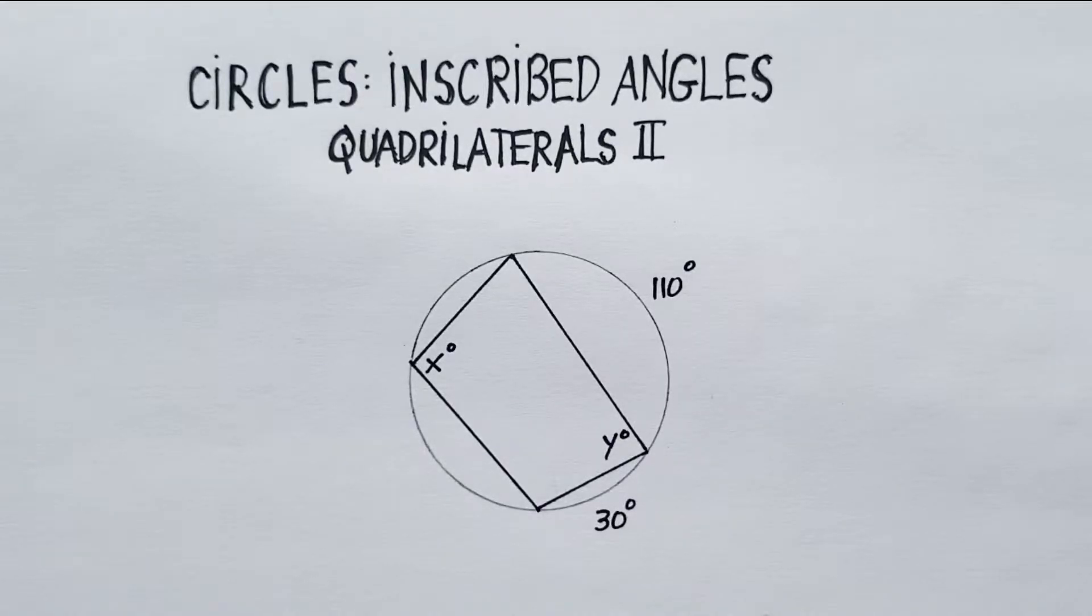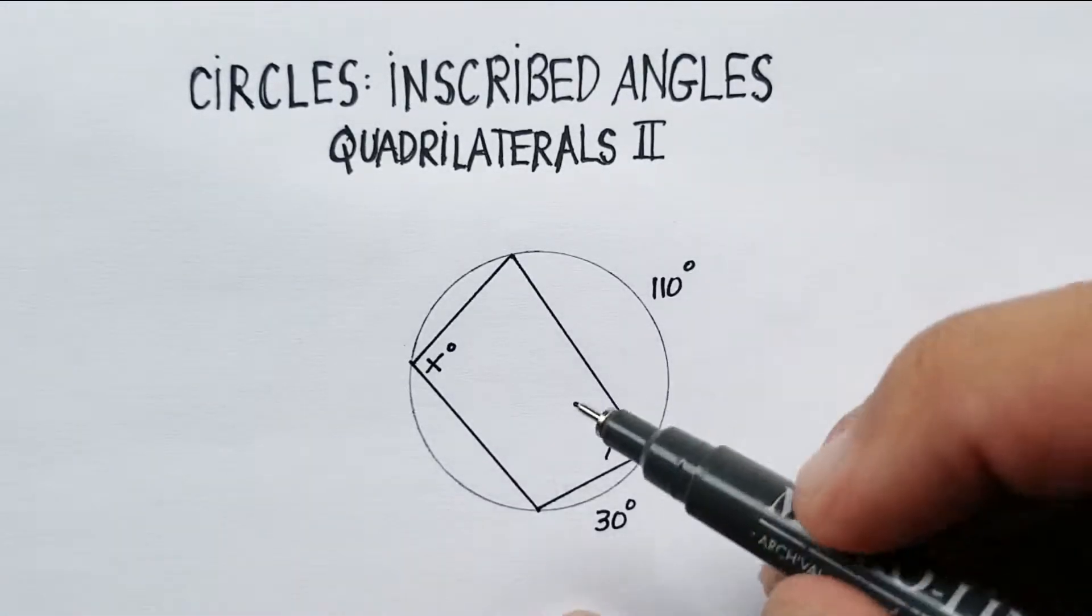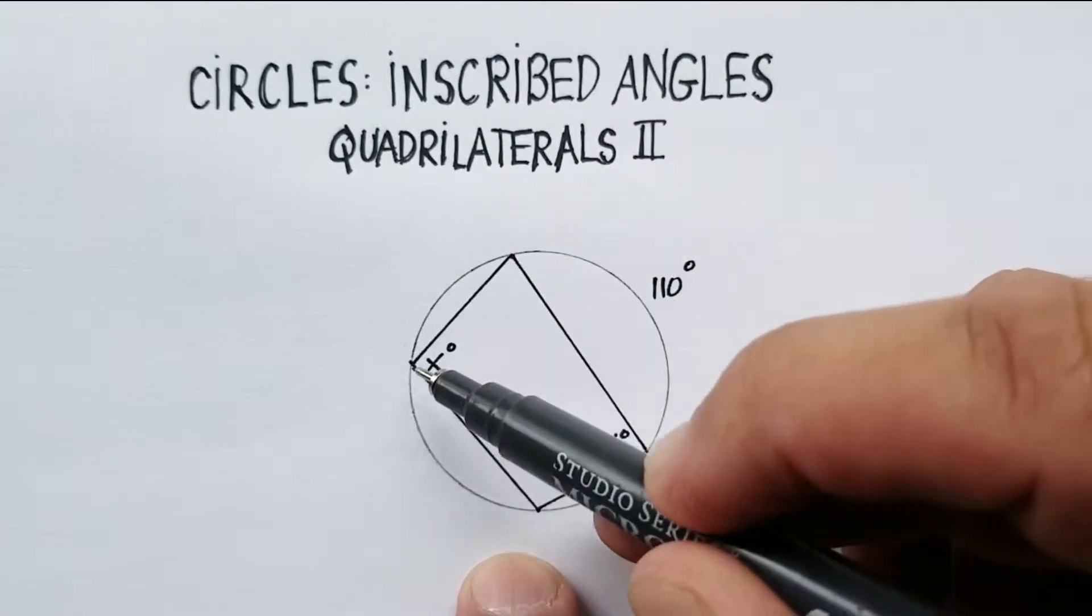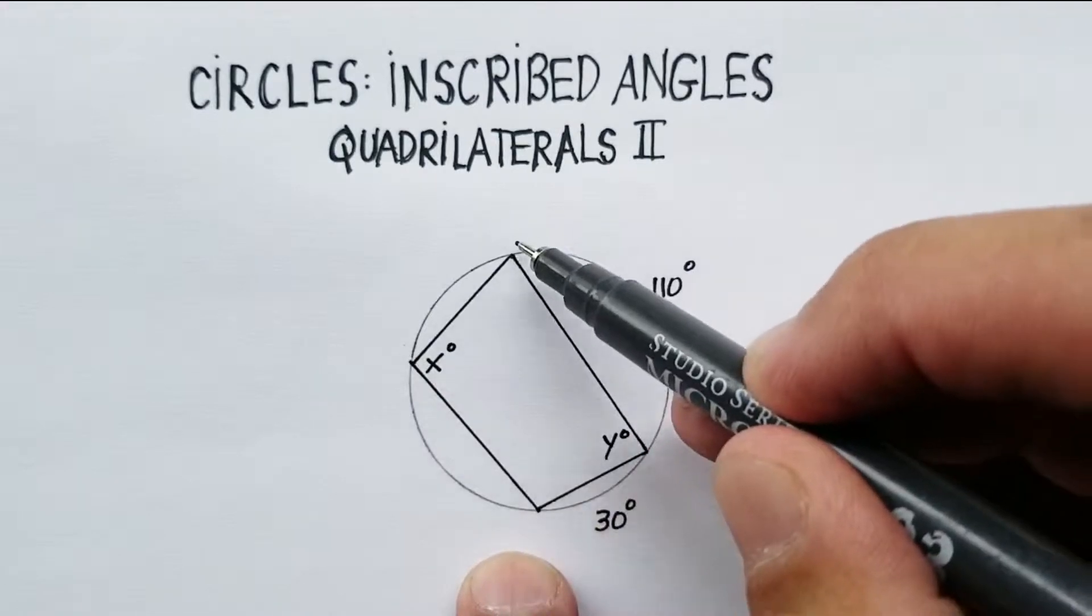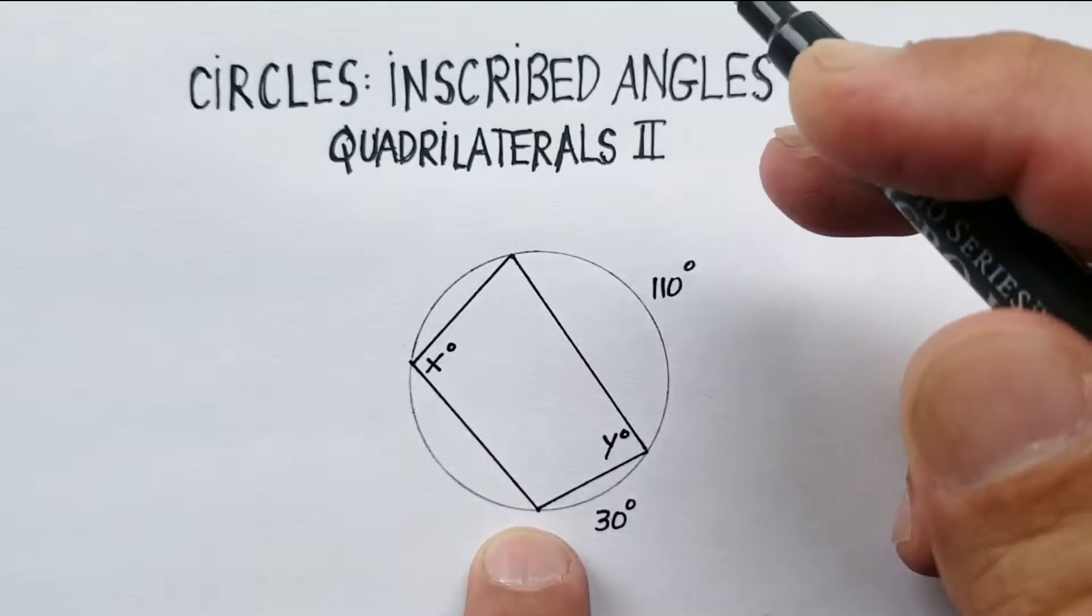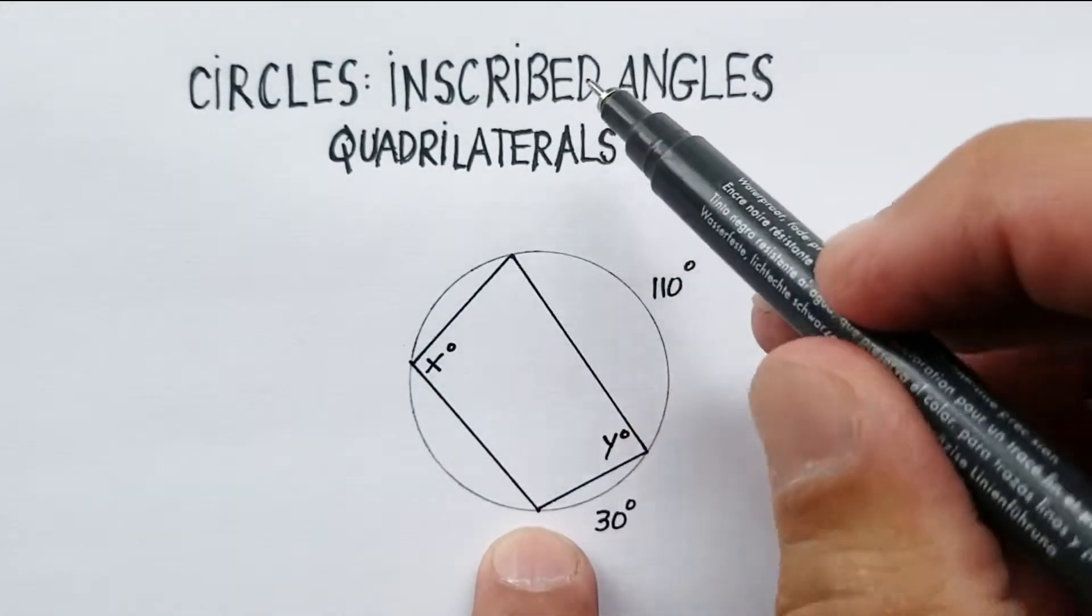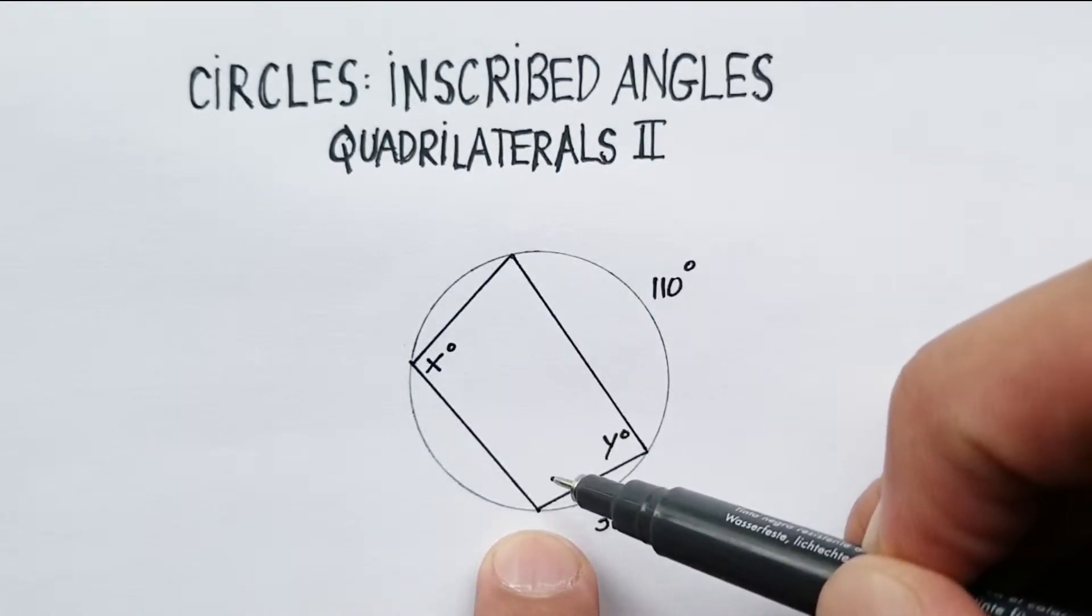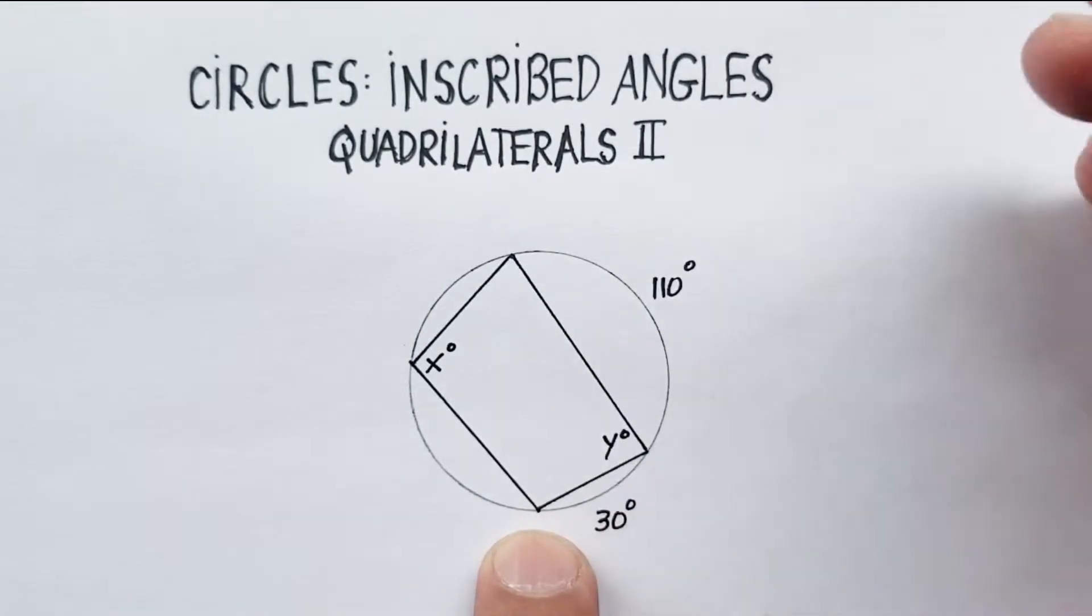Okay, in this video we're going to go over how to solve a particular problem which are called inscribed angles inside of a circle. In this particular example, we have a quadrilateral inscribed inside this circle, so let's get started.